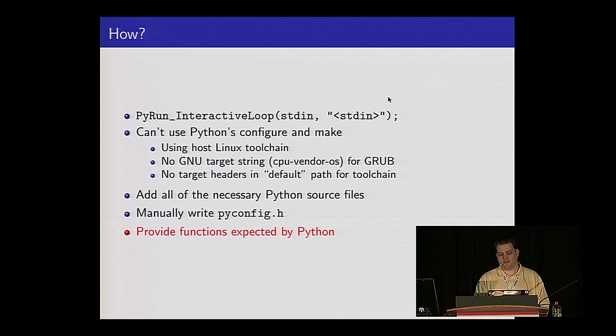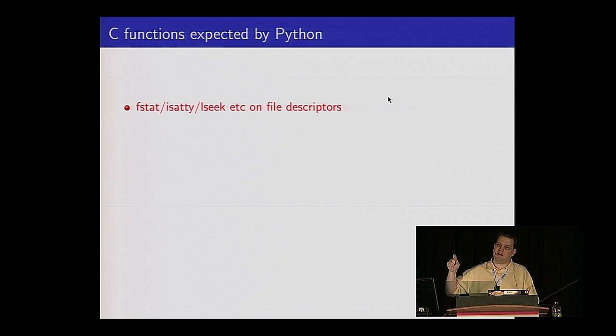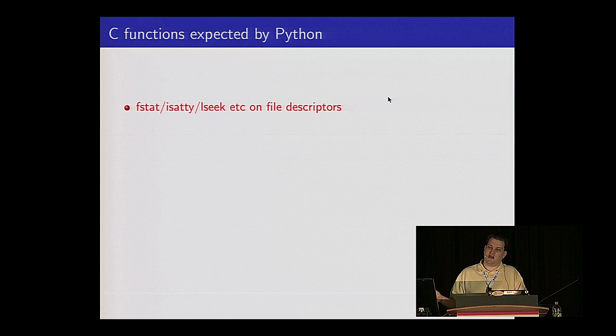We have to provide those functions that Python expects. It turns out you need some non-trivial file operations to run Python — things like stat, in order to find out 'is this a directory that might contain an __init__.py, or is this a file that is foo.py?' You need to know if something is a terminal, a TTY. We have a very simple implementation of that: if file descriptor less than 3, why yes, I'm a TTY.